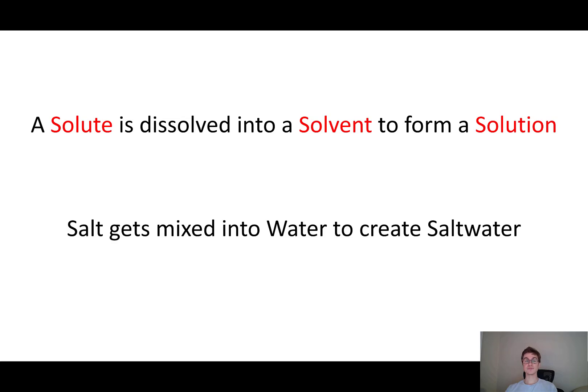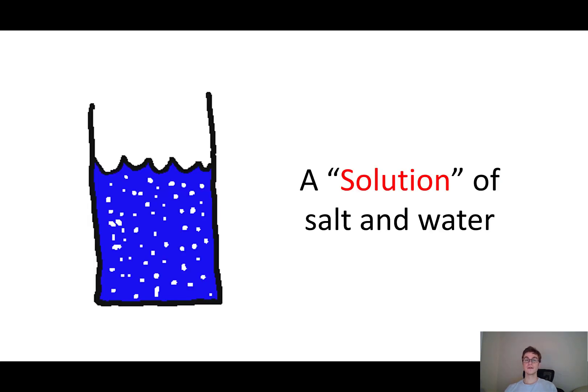As an example, when salt gets mixed into water to create salt water, the salt, the water, and the salt water are the things. The salt gets mixed into the water to make the salt water. So salt is the solute, water is the solvent, and salt water is the solution, the combination of both. This cup of salt water we made, we would call it a solution of salt and water.